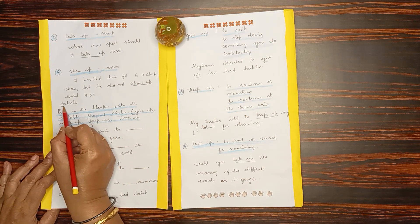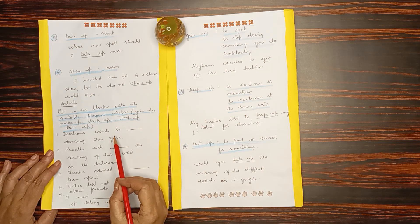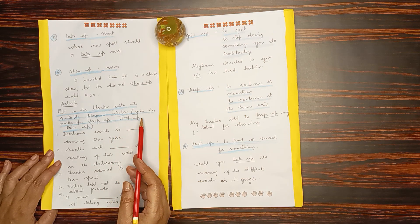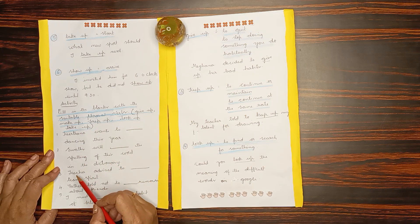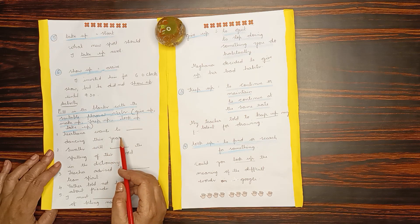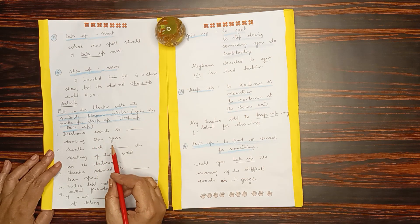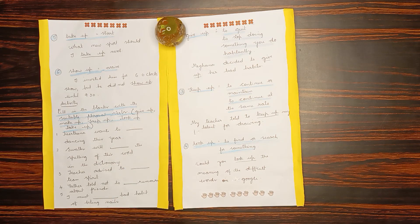Now, activity. Fill in the blank with the suitable phrasal verbs. These are the phrasal verbs given in the bracket: give up, make up, keep up, look up, take up. First sentence: Kirtana wanted to dash dancing this year. Take up. Kirtana wanted to take up.